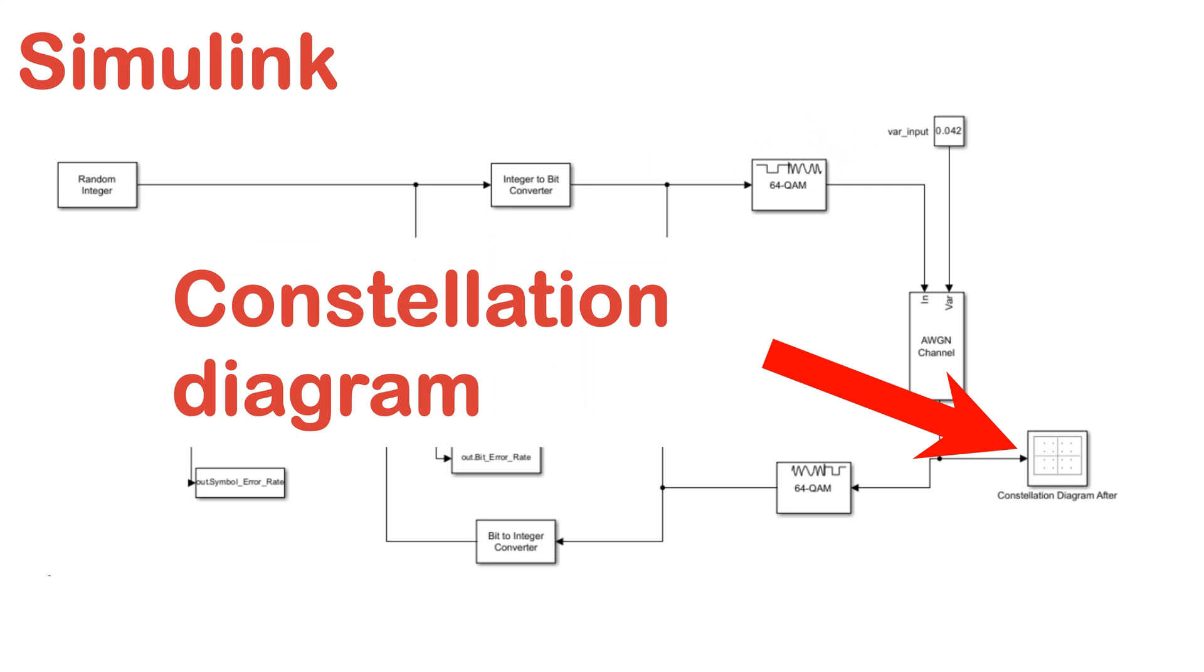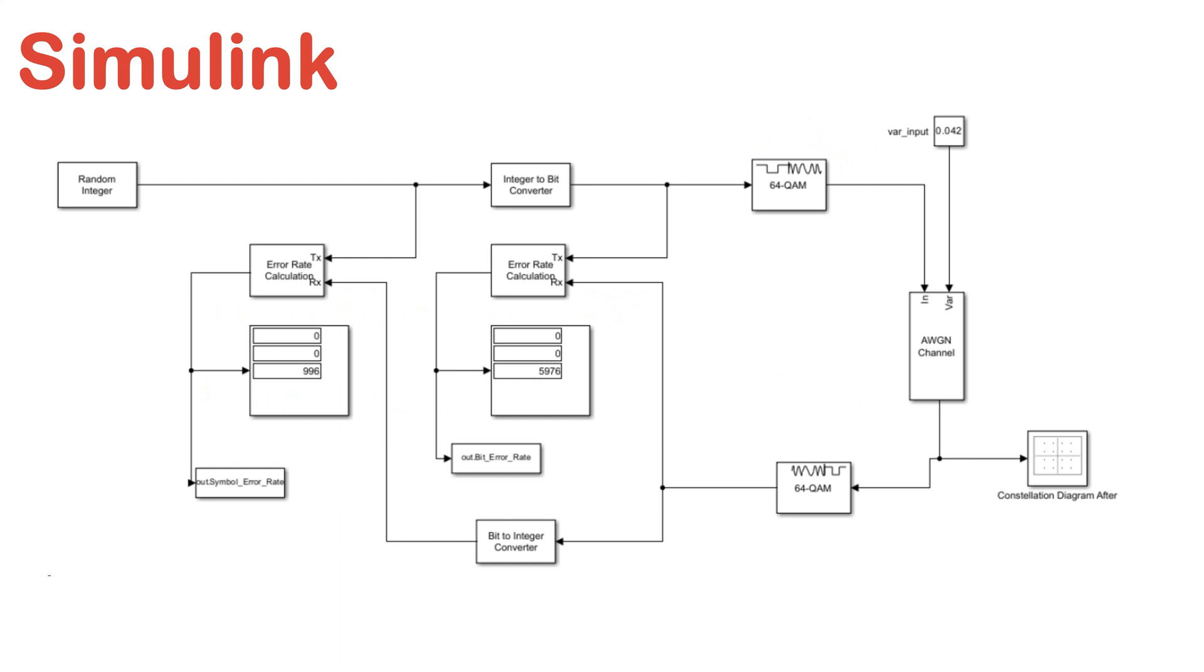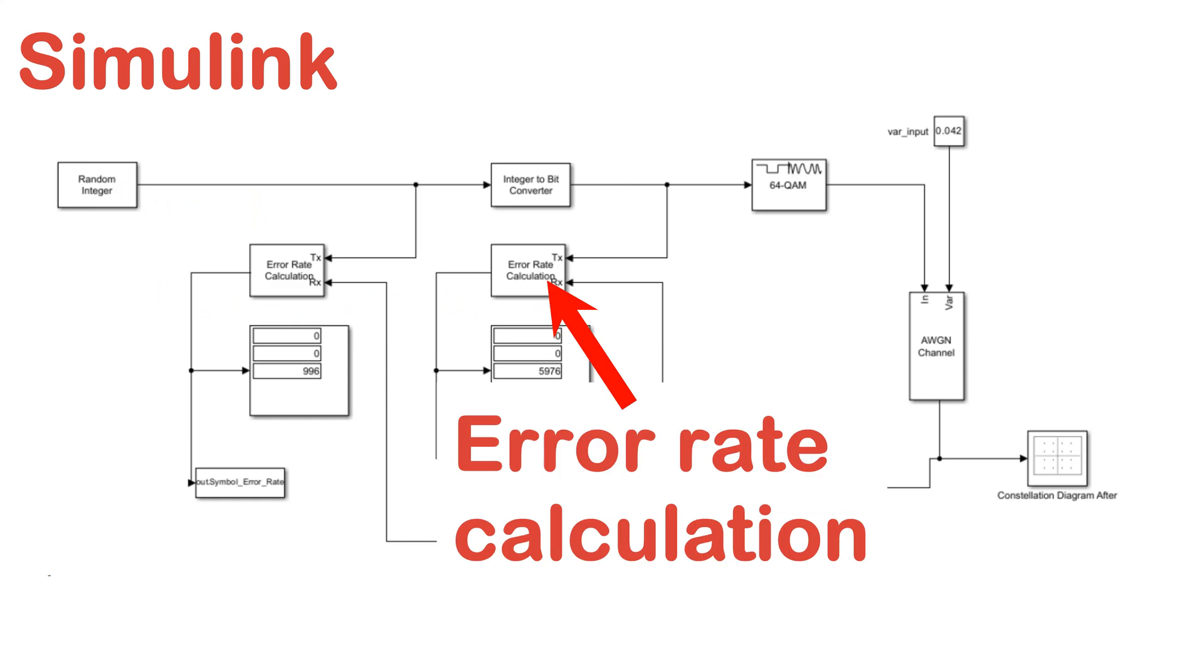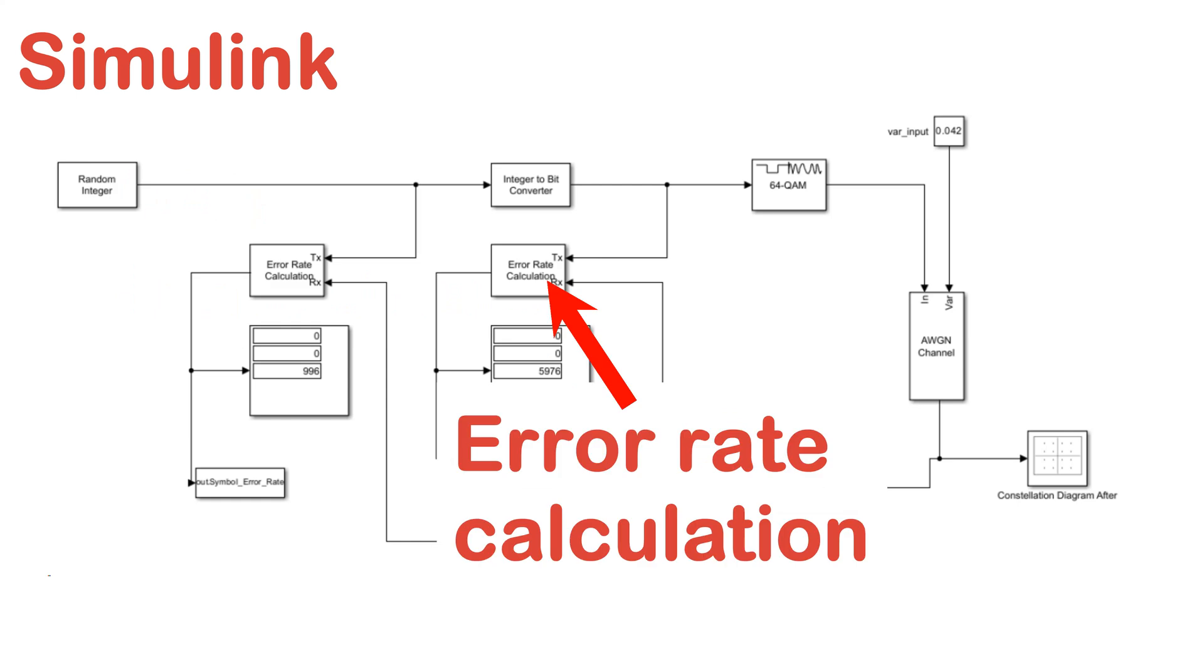The received symbols are then demodulated using the QAM demodulator block, and we calculate the bit error rate (BER) using the error rate calculation block. This will allow us to evaluate the performance of the communication system under different conditions.